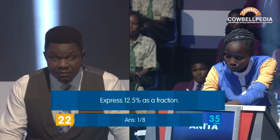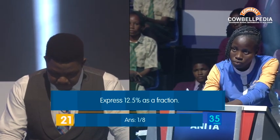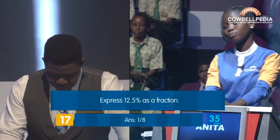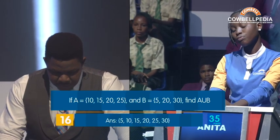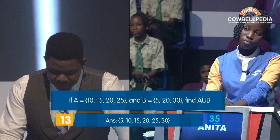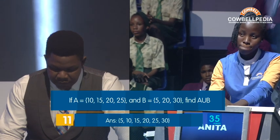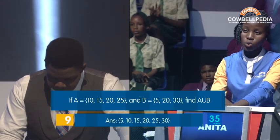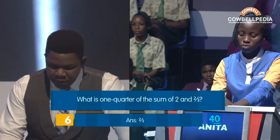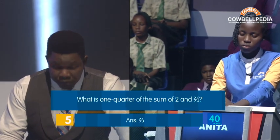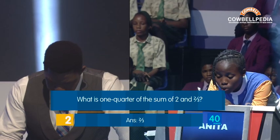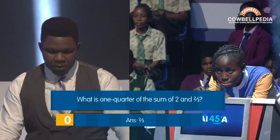Express 12.5% as a fraction — 5 over 4. Incorrect. If the set of A is 10, 15, 20, 25 and B is 5, 20, 30, find the union of A and B — 5, 10, 15, 20, 25, 30. Correct. What is 1 quarter of the sum of 2 and 2 over 3? — 2 over 3. Correct. Well done. Thank you.